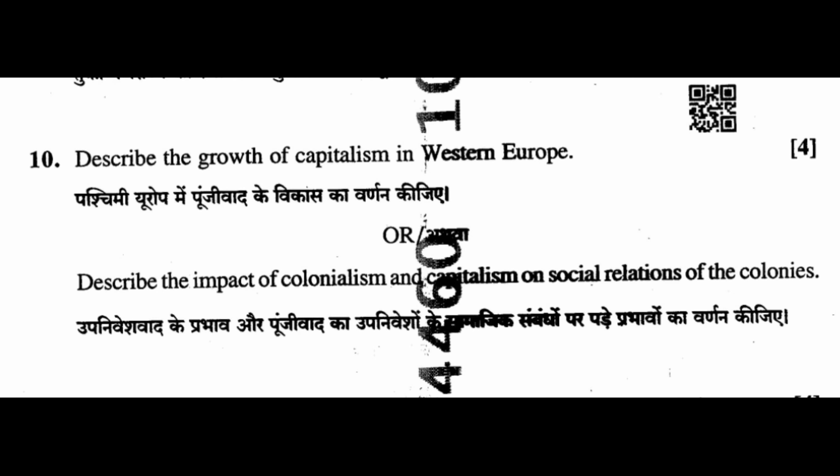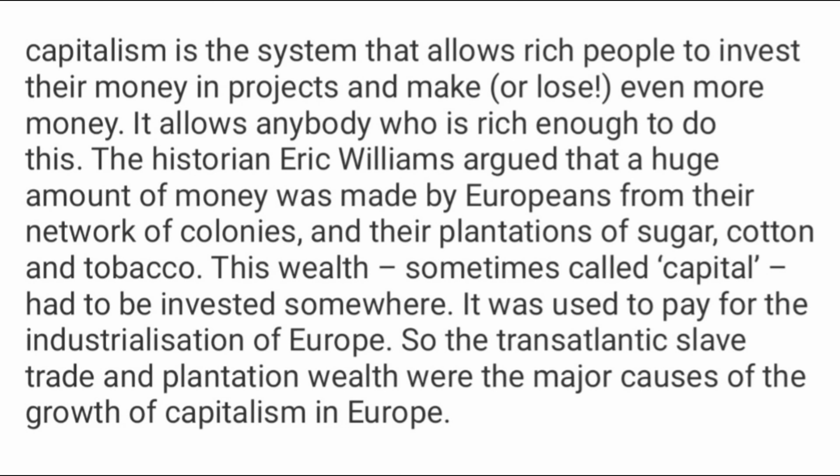Question 10: Describe the growth of capitalism in Western Europe. Capitalism is the system that allows rich people to invest their money in projects and make even more money. The historian Eric Williams argued that a huge amount of money was made by Europeans from their network of colonies and their plantations of sugar, cotton, and tobacco. This wealth, sometimes called capital, had to be invested somewhere — it was used to pay for the industrialization of Europe. So the trans-Atlantic slave trade and plantation wealth were the major causes of the growth of capitalism in Europe.